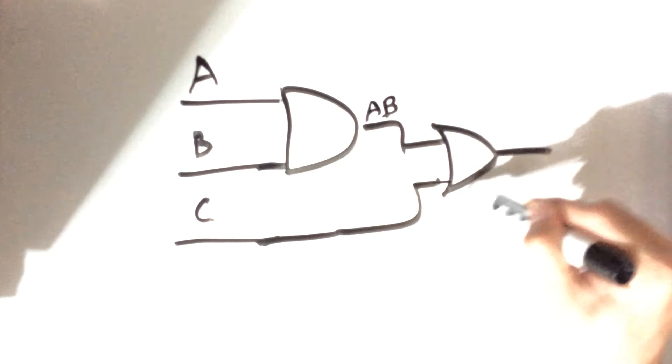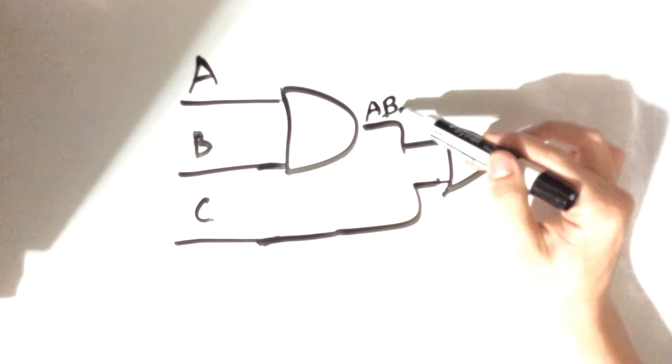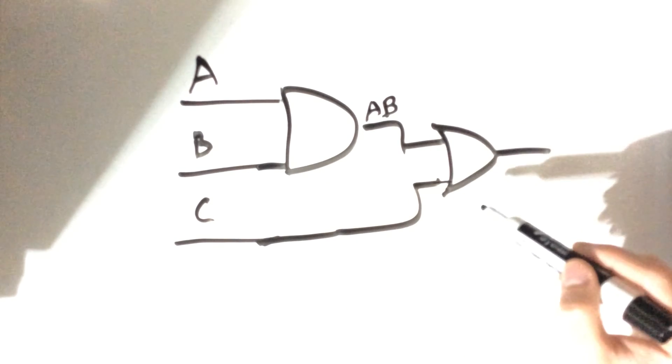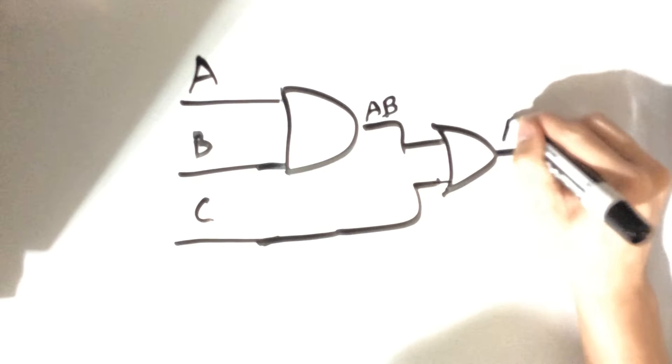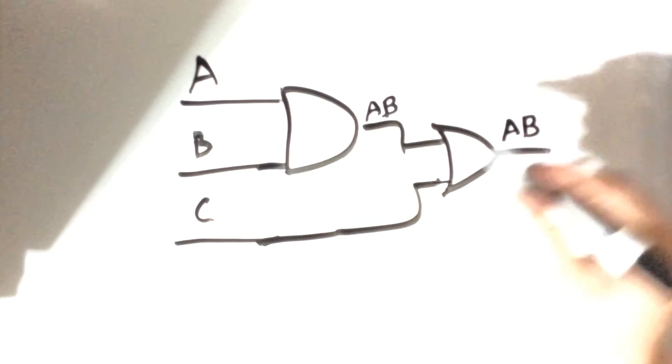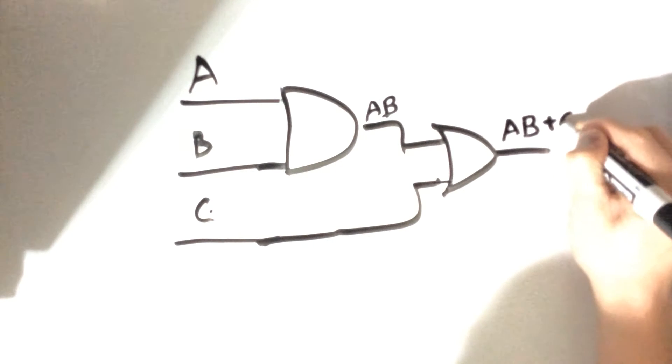Now we have a value C, so input C is connected to this OR gate right here. So now we have AB or C. Let's write out AB or C. If you remember, this is how we represent OR with the plus sign.